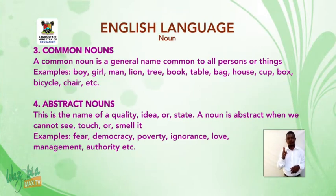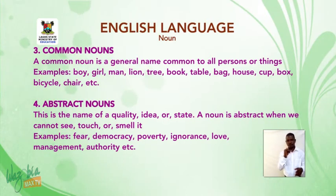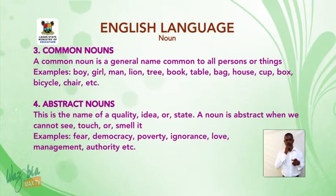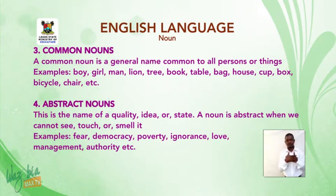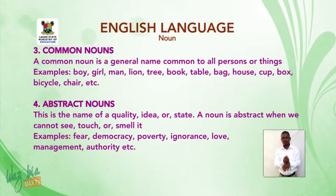Four: abstract nouns. This is the name of a quality, idea, or state. It is abstract — we cannot see, touch, or smell it. Examples: fear, democracy, poverty, ignorance, love, management, authority, etc.